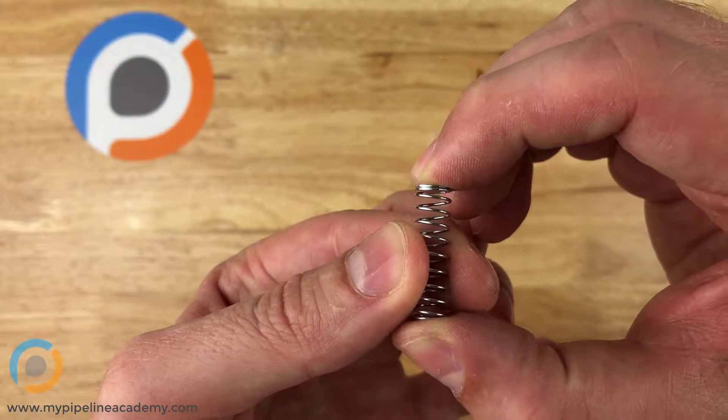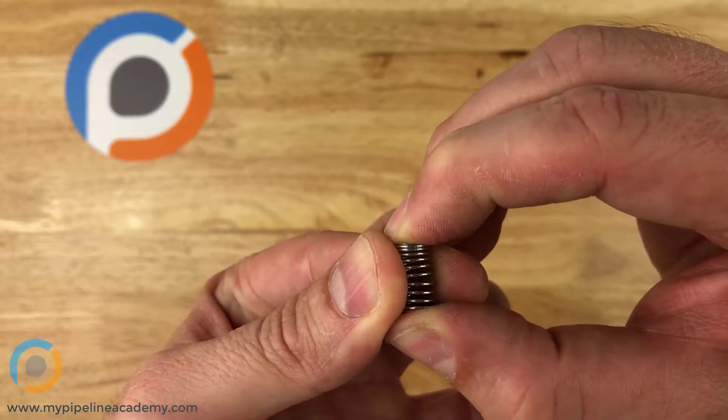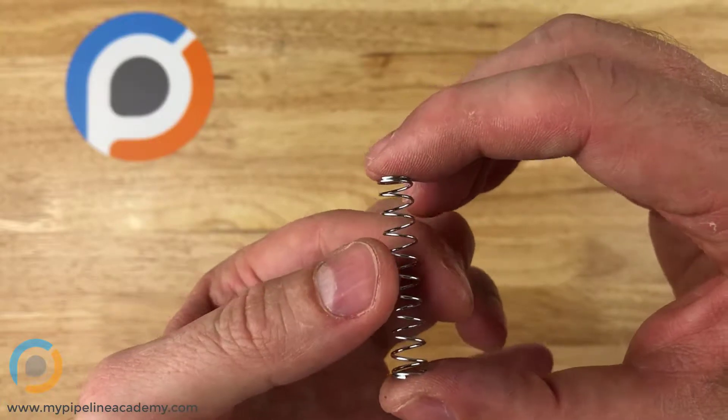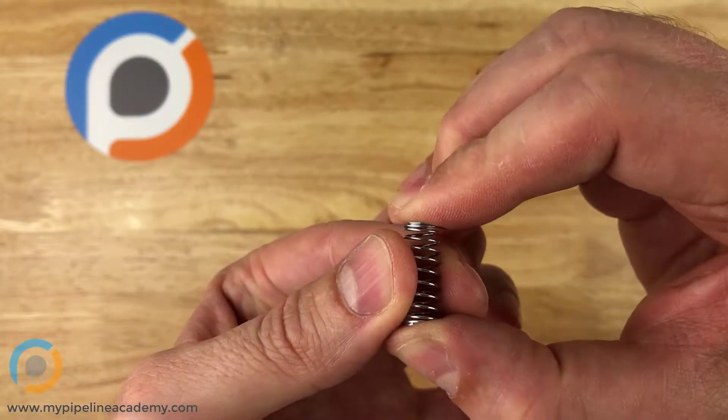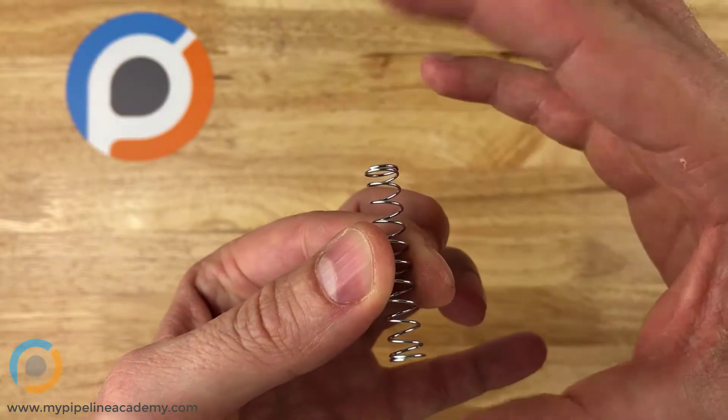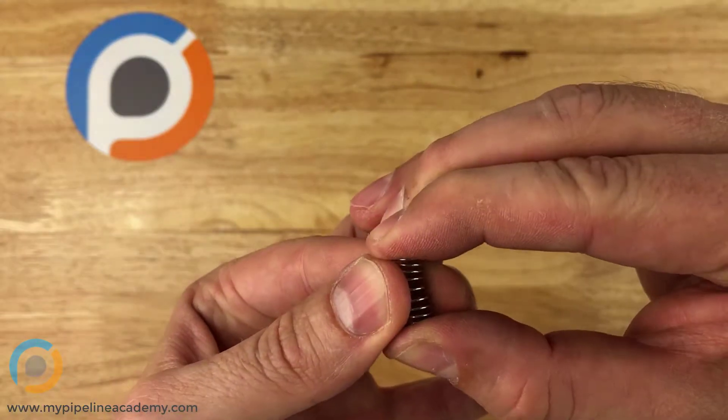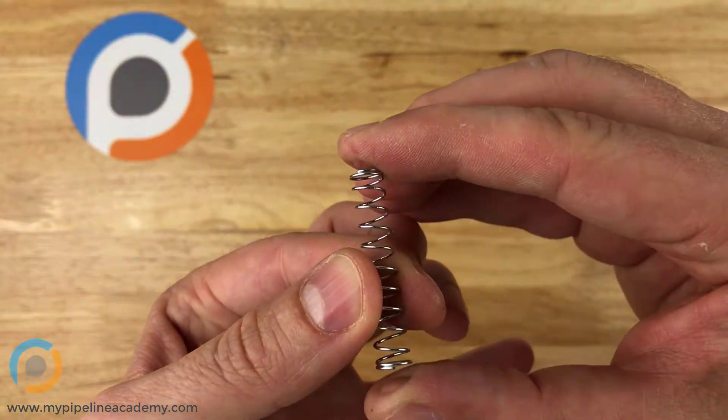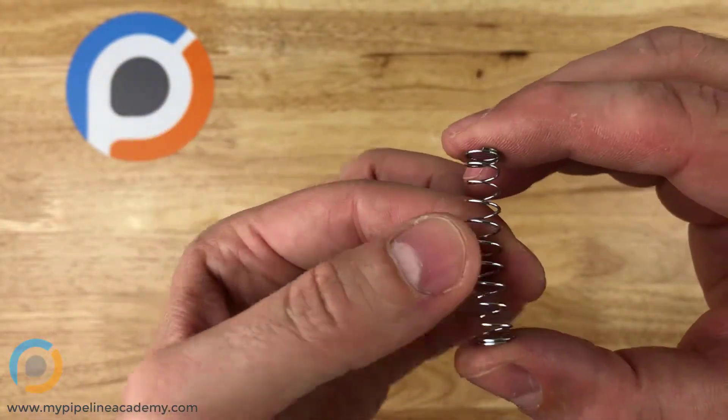Compression because you compress it in order to store energy in it. Springs are kind of energy reservoirs. You push it to put energy into it and then when you release it, that energy is spit back out at you because it has been stored in here.